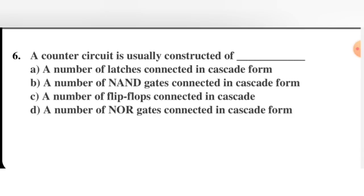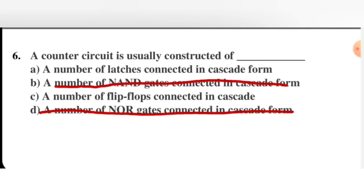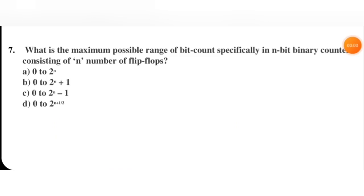Next question: a counter circuit is usually constructed of — a number of latches connected in cascade, a number of NAND gates connected in cascade, a number of flip-flops connected in cascade, or a number of NOR gates connected in cascade. The first two options are completely wrong. C is the right option: flip-flops connected in cascade.